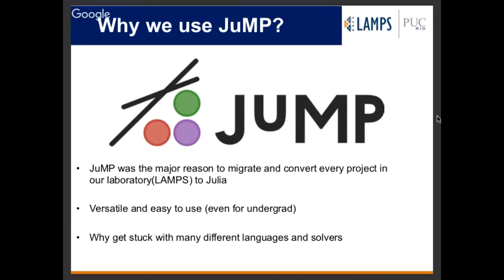We had issues using optimization in other languages, for example MATLAB — it's very bad for optimization. If you have a commercial product in MATLAB, many times you have to use another language like Mosel to optimize the model, which was very bad for the final product. We also got stuck with specific solvers. If everyone in the lab uses Express, you can't easily change, and switching to CPLEX or Gurobi would be a huge change. With JuMP, we can change solvers easily and test different solvers to see which is best for each problem.